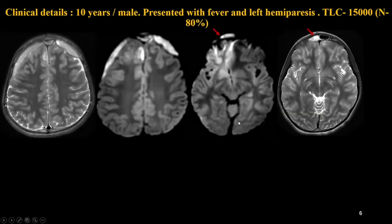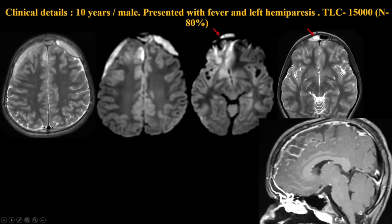A companion case: this 10-year-old presented with fever and left hemispheric deficits and was actually sent to us for evaluation of stroke. The TLC counts were raised. We have diffusion-restricting subdural empyema at bilateral subfrontal convexities and the interhemispheric fissure. Importantly, there is also a collection in the right frontal sinus showing diffusion restriction — this should be given much importance. There is some diffusion restriction in the right basifrontal area correlating to the patient's symptoms. The sagittal image shows the peripherally enhancing subdural collection and enhancement of the frontal sinus — again, subdural and extradural empyema secondary to frontal sinusitis.